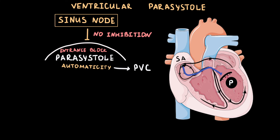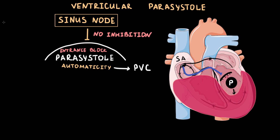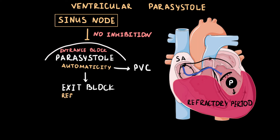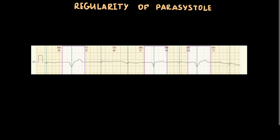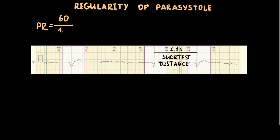The automaticity of parasystole means regularity of parasystolic activation. However, sometimes when the next parasystolic activation should occur, the ventricles cannot be stimulated because of the refractory period from a previous normal activation. This inability of parasystole to activate the ventricles due to the refractory period is called exit block. To calculate the parasystolic rate, we find the shortest distance between parasystolic contractions — in our case, 1.1 seconds — and apply the classic heart rate formula, giving a parasystolic rate of 54 beats per minute.